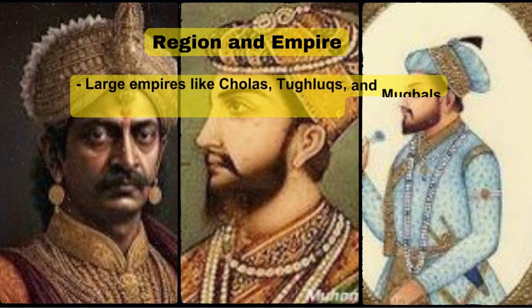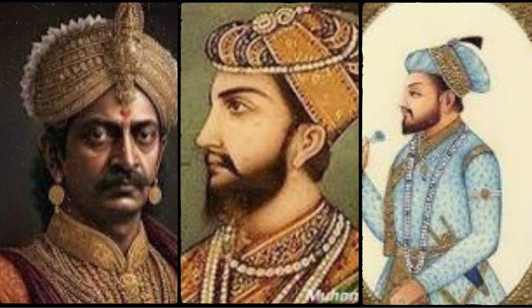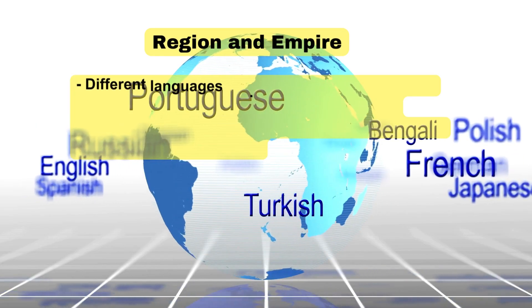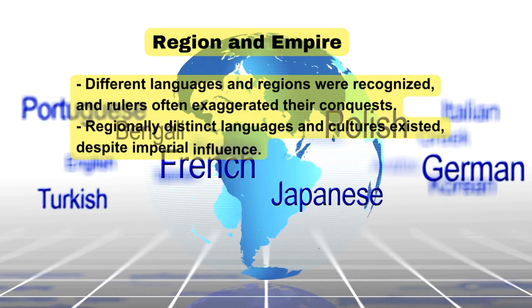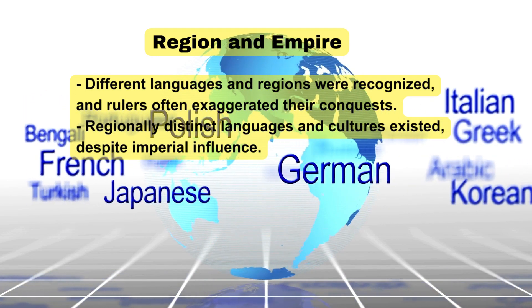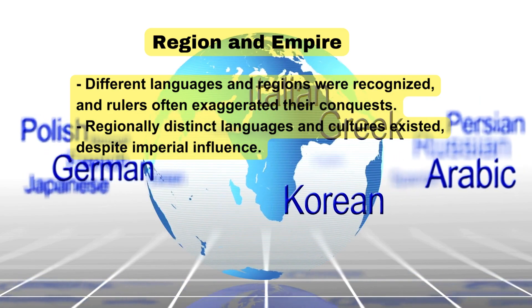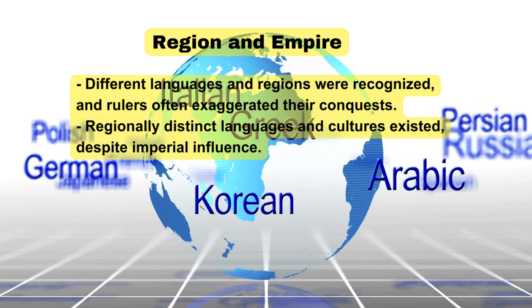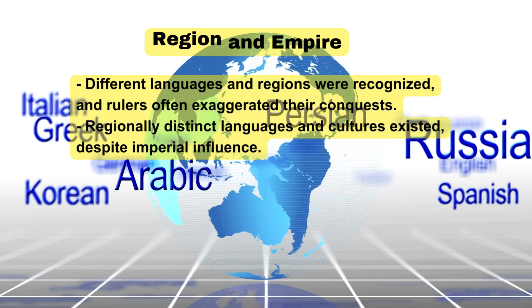Region and Empire: Large empires like the Cholas, Tughlaqs, and Mughals claimed control over various regions. Different languages and regions were recognized, and rulers often exaggerated their conquests. Regionally distinct languages and cultures existed despite imperial influence.